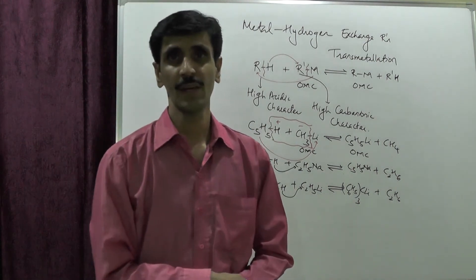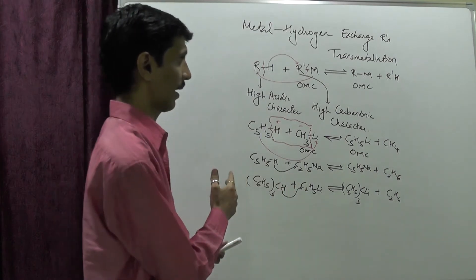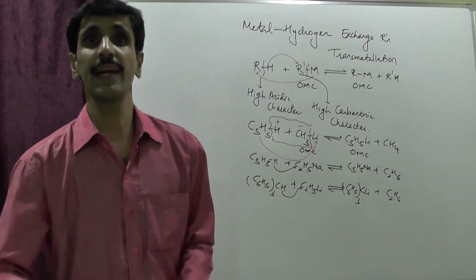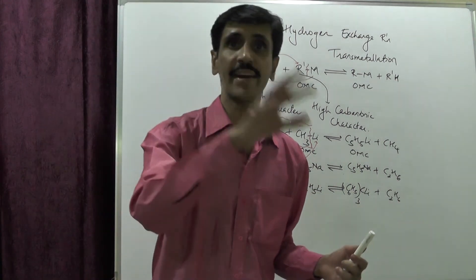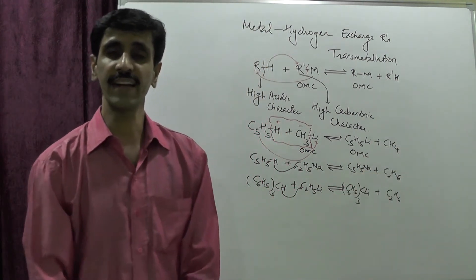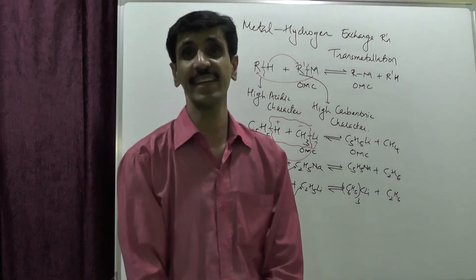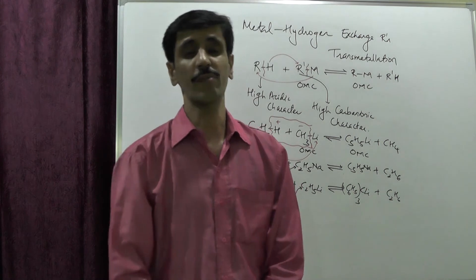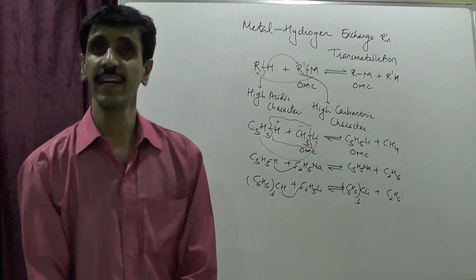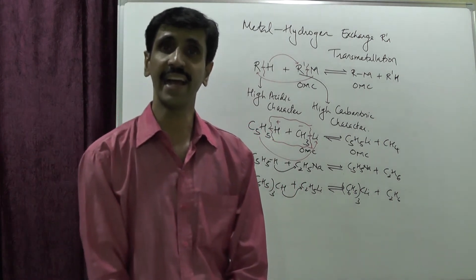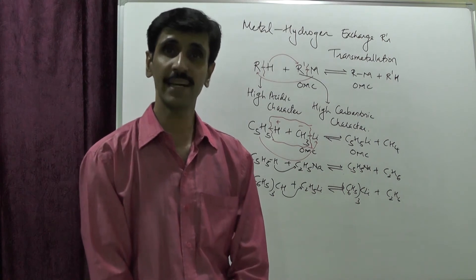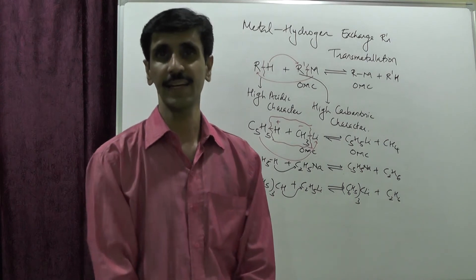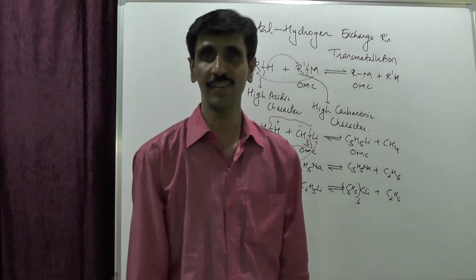For this reaction to take place, the carbanion character should be present. There are ways to increase the carbanion character by using certain solvents. For example, we have THF — tetrahydrofuran — or we can also use TMEDA, that is tetramethylethylenediamine. Let me give you one example so that you understand this very well.